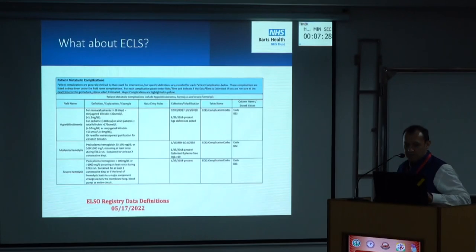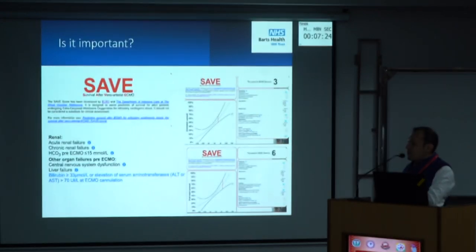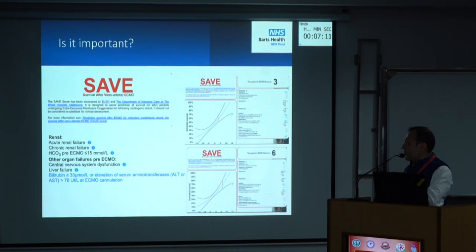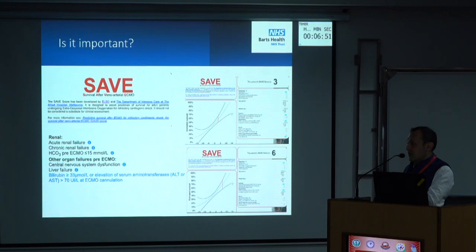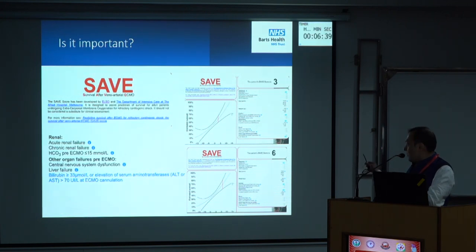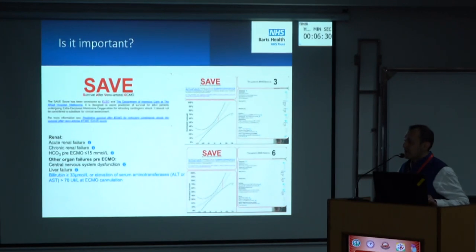Why is this important? The SAVE score for VA ECMO outcome prediction includes liver failure as one of its scoring criteria. I created a hypothetical patient: with liver failure the SAVE score is three and survival is roughly 45–60%. When liver failure is removed from the scoring, the SAVE score doubles and survival goes up to about 60–80%. So you can see why high bilirubin in extracorporeal life support is important.